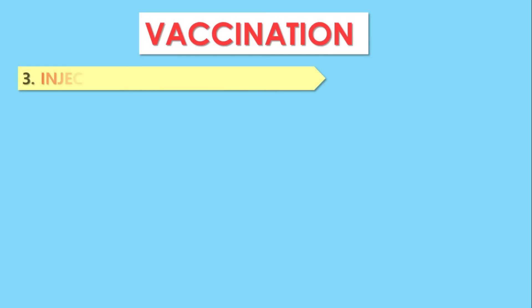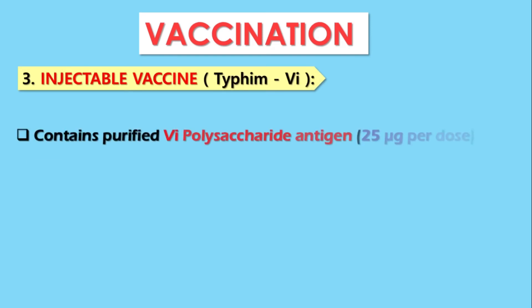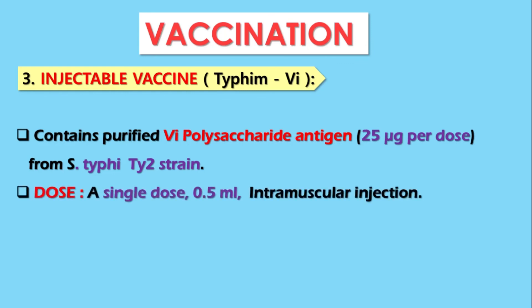The next injectable vaccine is Typhim Vi, prepared from purified Vi polysaccharide antigen at a dose of 25 micrograms per dose. Only a single dose of 0.5 ml is given intramuscularly, with each 0.5 ml containing 25 micrograms of the Vi polysaccharide antigen. It is 75% efficient and provides good protection. This concludes the topic of prophylaxis. Thank you.